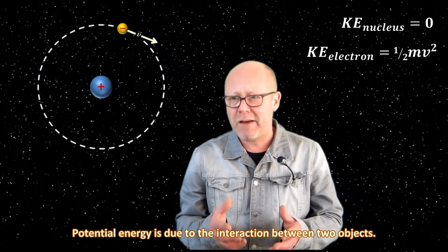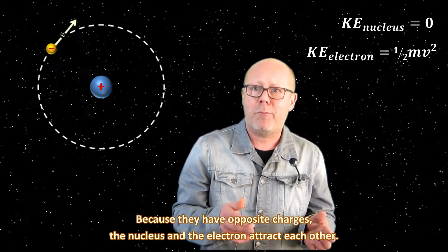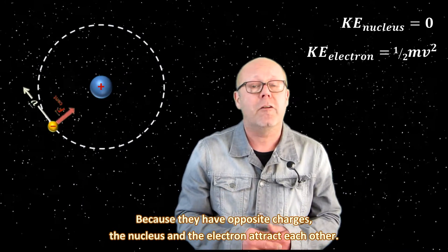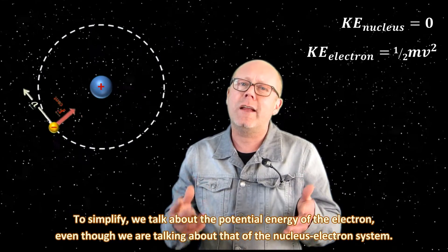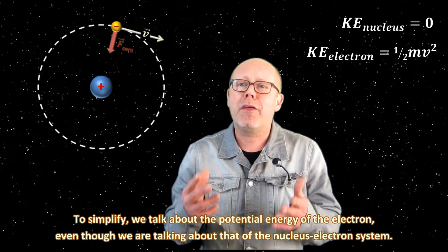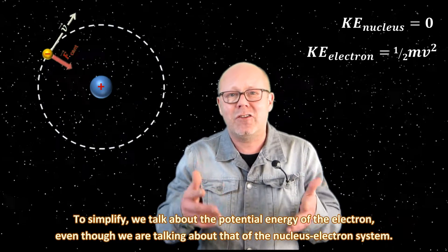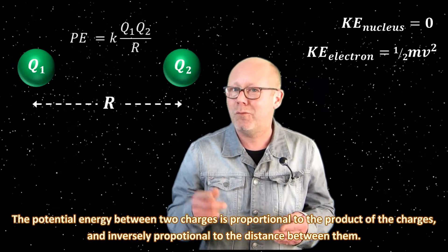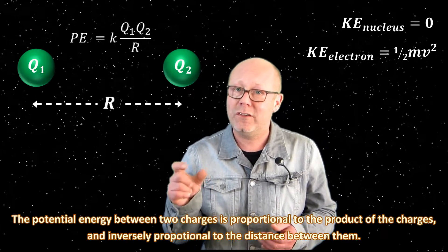Potential energy is due to the interaction between two objects. Because they have opposite charges, the nucleus and the electron attract each other. To simplify, we talk about the potential energy of the electron, even though we are talking about that of the nucleus-electron system. The potential energy between two charges is proportional to the product of the charges, and inversely proportional to the distance between them.